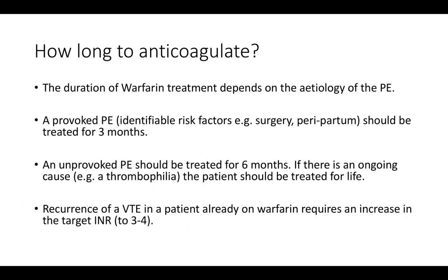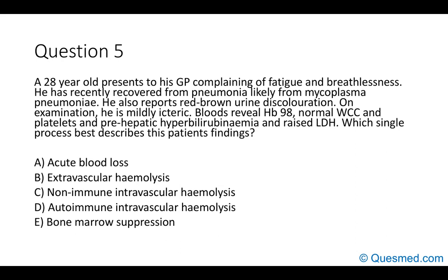The duration of anticoagulation depends on the etiology of the pulmonary embolism. For a provoked PE, such as post-surgery, treat for three months. For an unprovoked PE, treat for six months. If there's an underlying cause, you'll likely treat for life. For recurrent venous thromboembolism, increase the INR target to three to four.